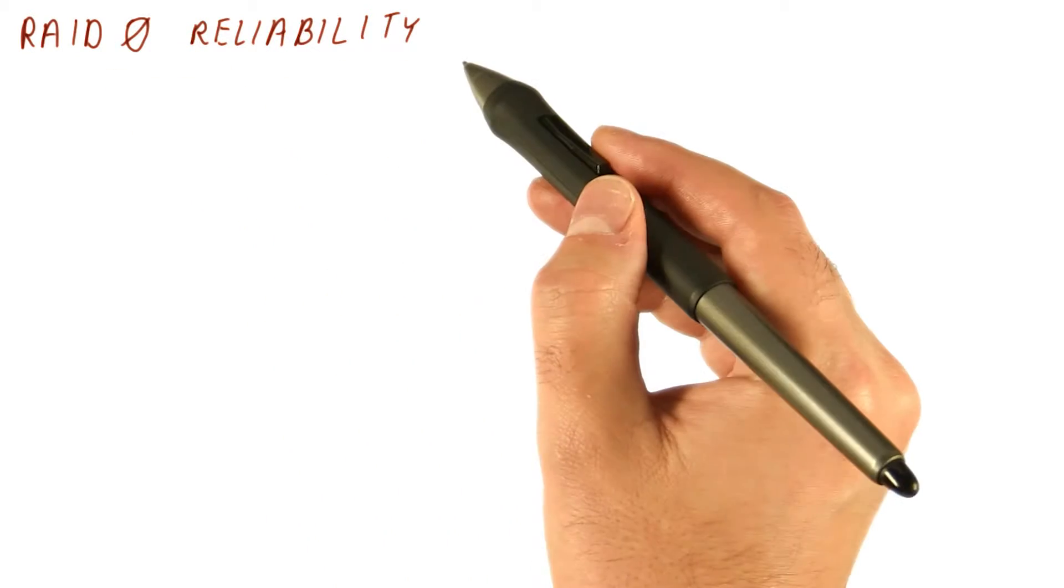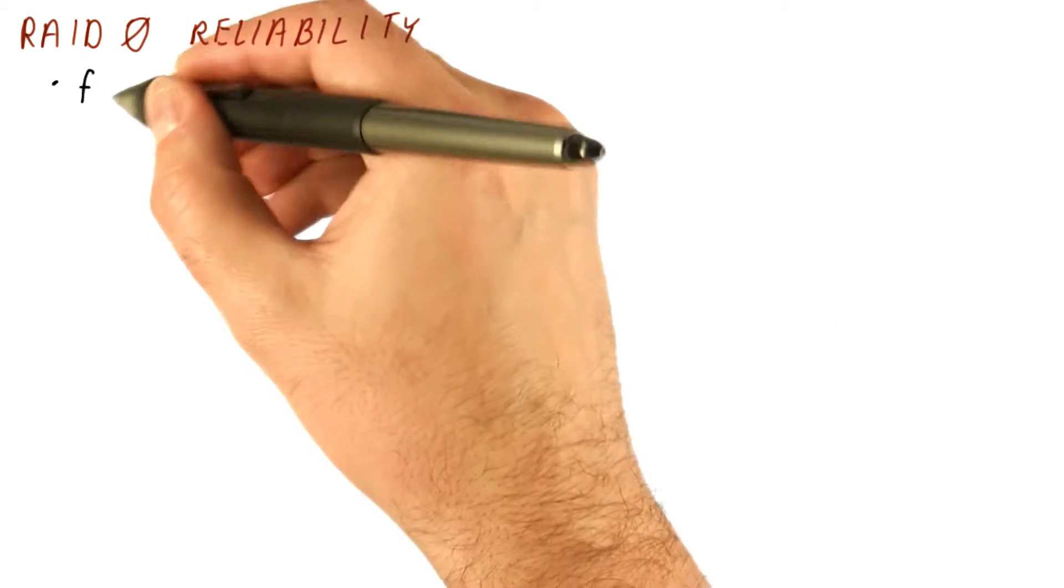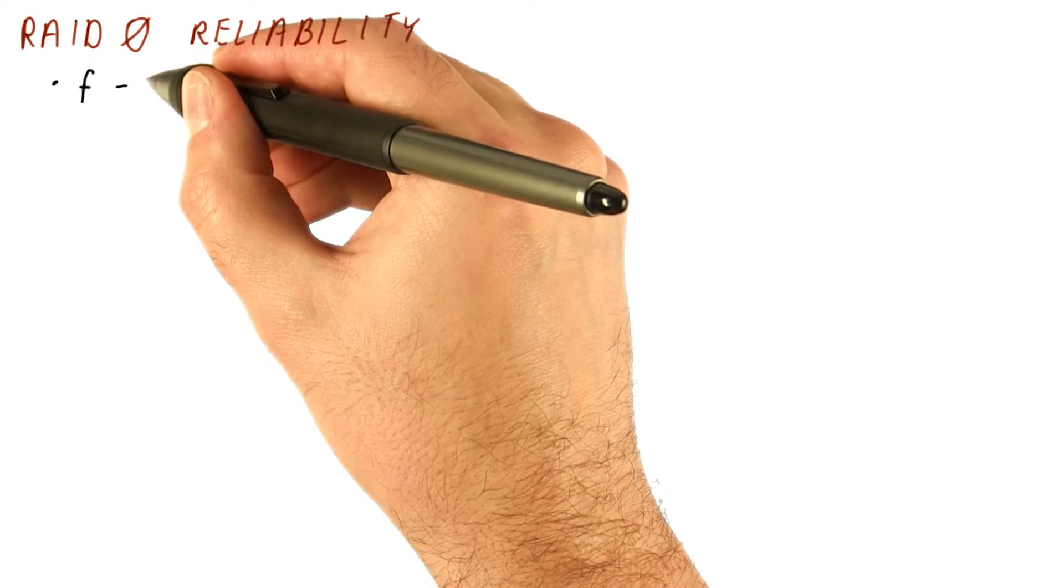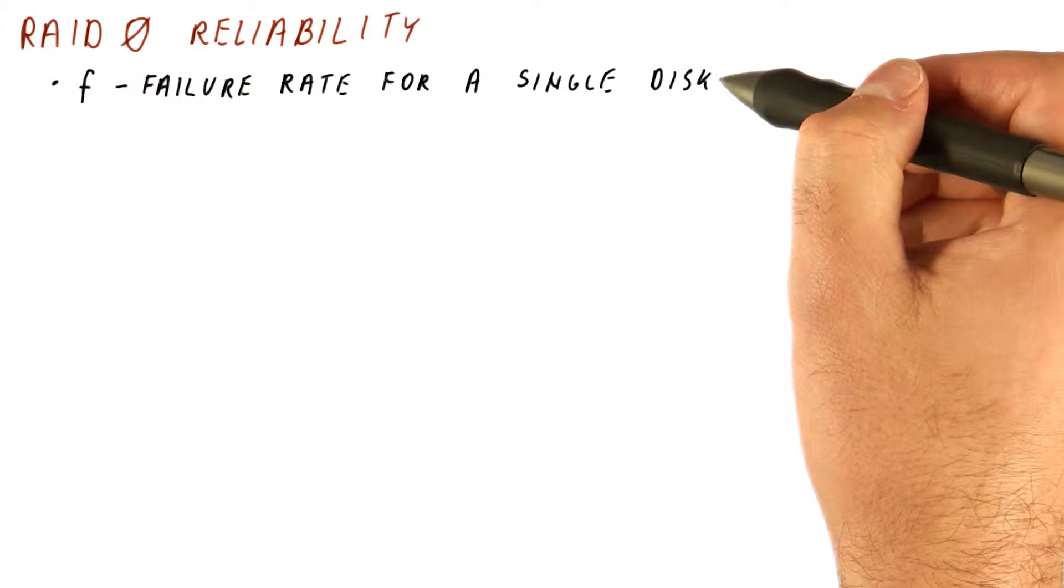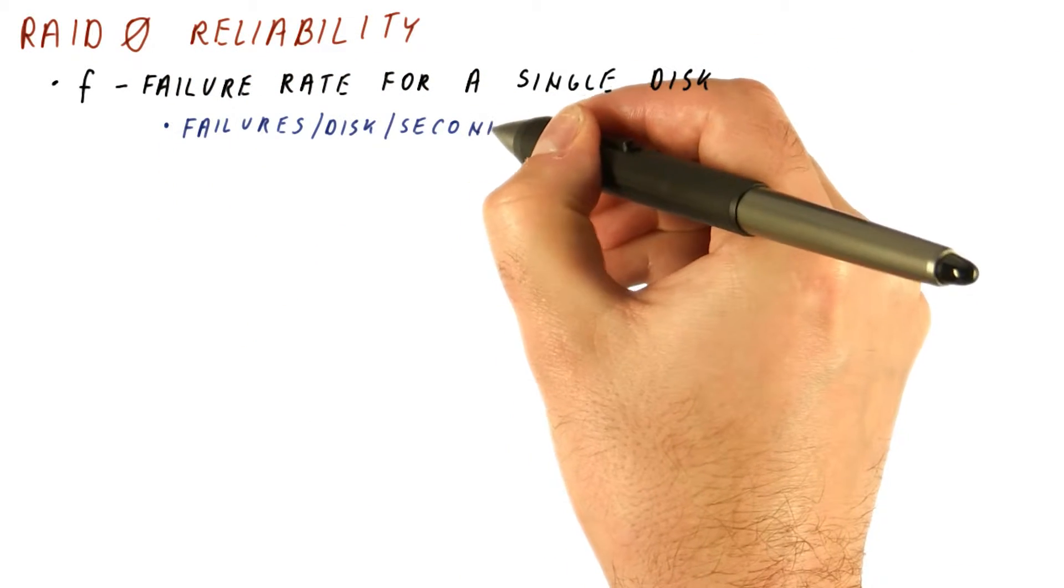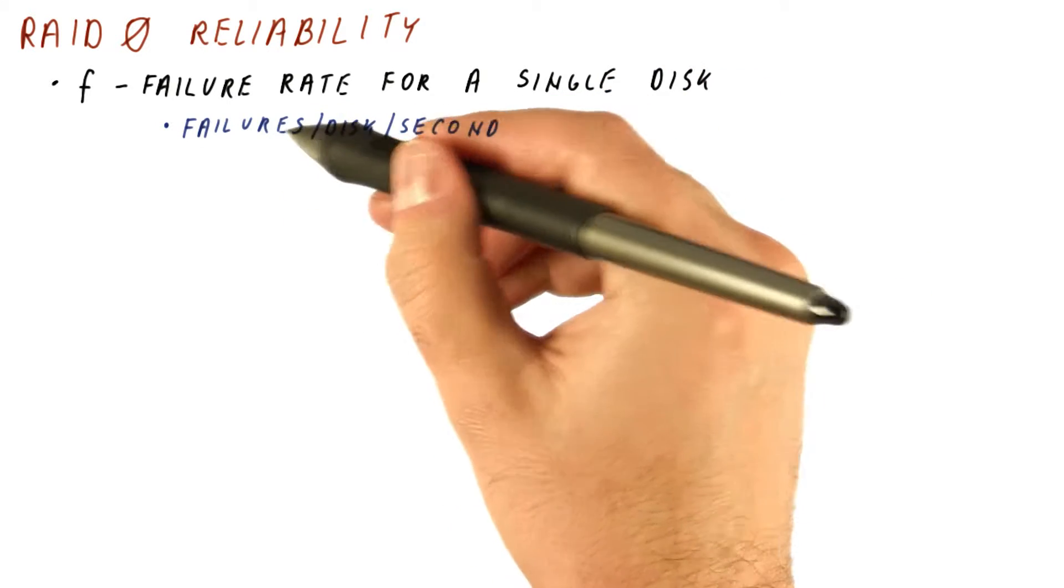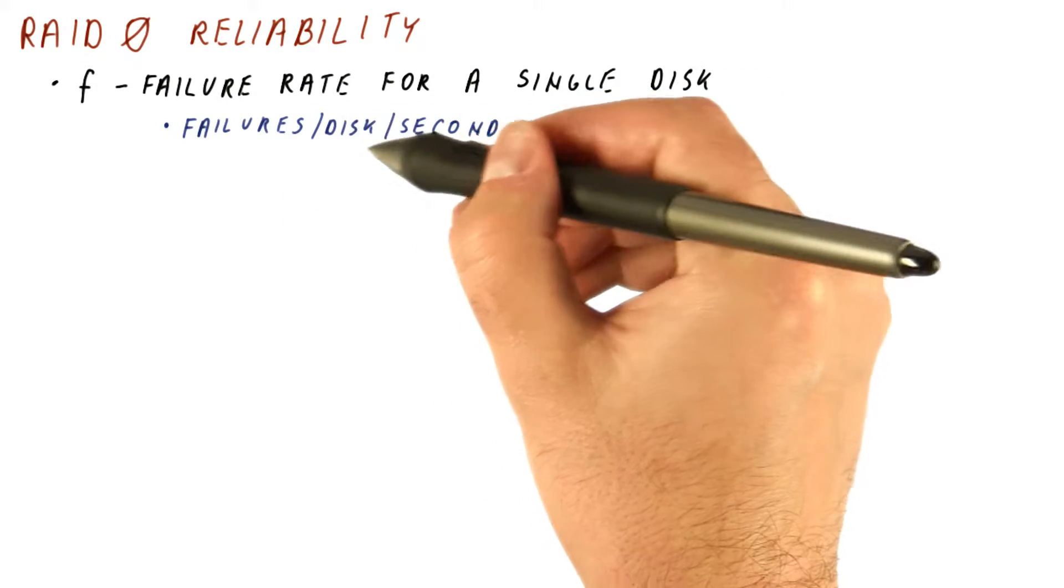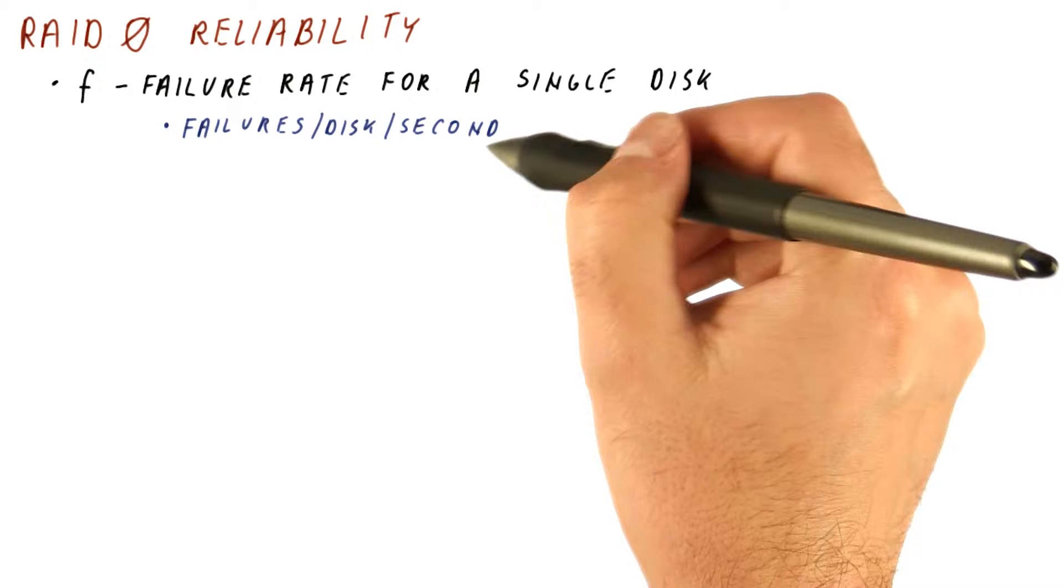To see what RAID 0 reliability looks like, let's assume that f is a failure rate for a single disk. A failure rate is really how many failures do we expect for a single working disk to have in a second.